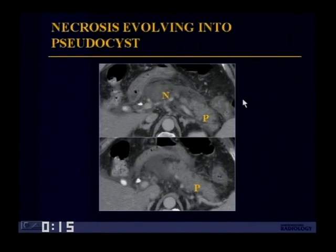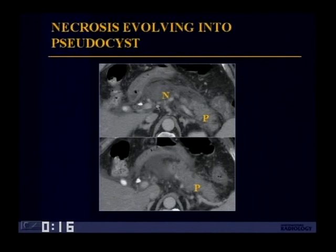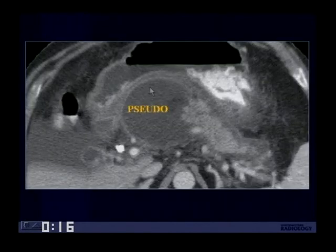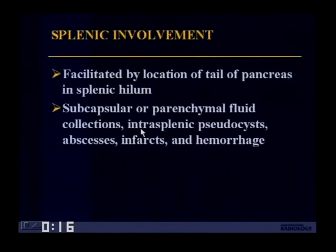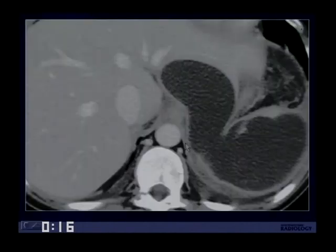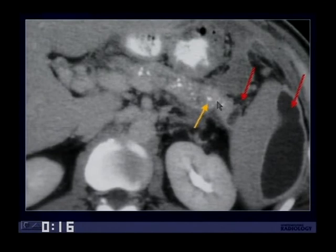Dr. Balthazar and others feel that many pseudocysts are a result of necrosis, either detected or not. Over the course of several weeks, an area of necrosis can develop into a pseudocyst, replacing the pancreas. Splenic involvement is often seen with acute pancreatitis due to the location of the pancreas near the splenic hilum — you can see subcapsular parenchymal fluid collections, pseudocysts, abscesses, infarcts, and hemorrhage. Here's an example of a large fluid collection dissecting into the splenic bed, and another patient with chronic pancreatitis with calcifications showing a small pseudocyst and perisplenic fluid collection.